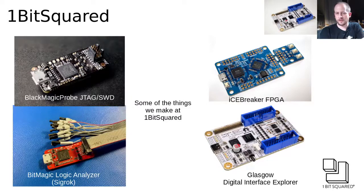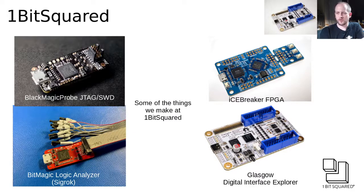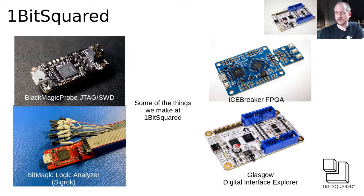Here are a few things that we make. It's a Blackmagic Probe — a JTAG and SWD debugger with a built-in GDB server, so you don't need an in-the-middle tool like OpenOCD, which makes it easier to use where it auto-detects the targets. We also make the Icebreaker FPGA, which is an iCE40 UP5k based development board designed for use in education as well as a good prototyping board for your projects. It is meant to work with the open source FPGA flow, which is called EOSYS HQ, so you should check it out if you don't know about this yet.